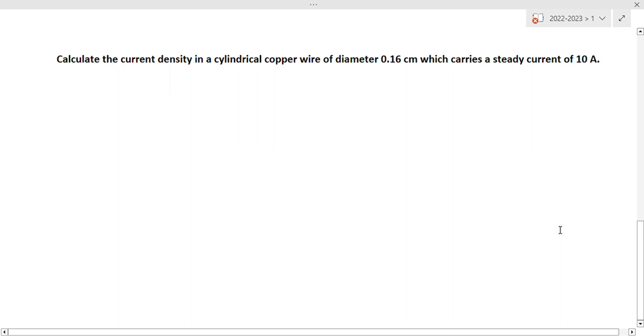Calculate the current density in a cylindrical copper wire of diameter 0.16 cm which carries a steady current of 10 amperes.